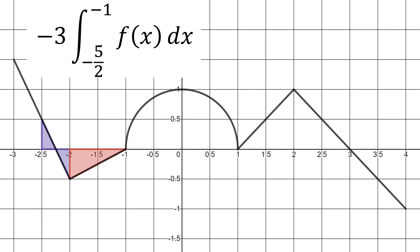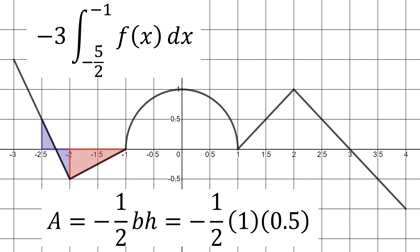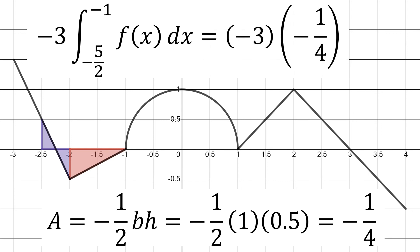The remaining red triangle has x values going from negative two to negative one. Its area equals negative one half base times height, since it's below the x-axis. The base is one and the height is 0.5, giving negative one fourth. We then multiply this by the negative three constant out front: negative three times negative one fourth equals positive three fourths. We expected a positive result because we had more negative area, which when multiplied by the negative three, flips to positive.